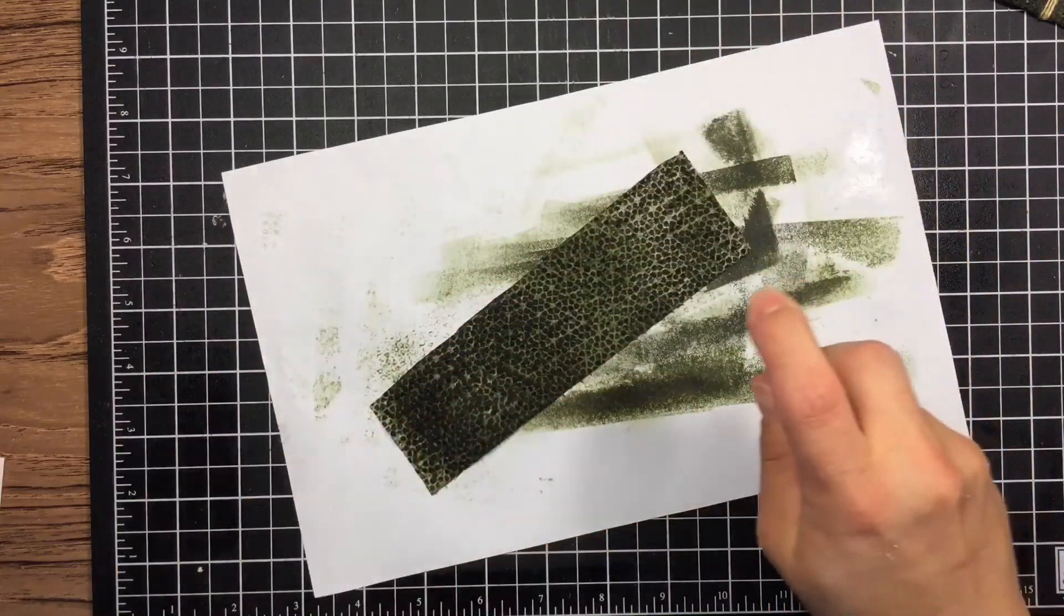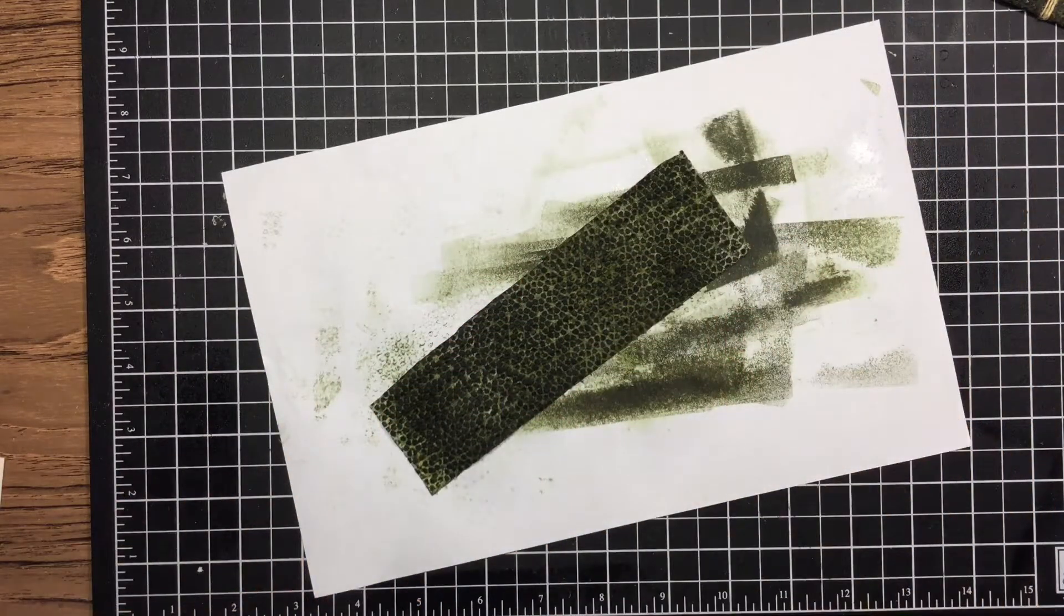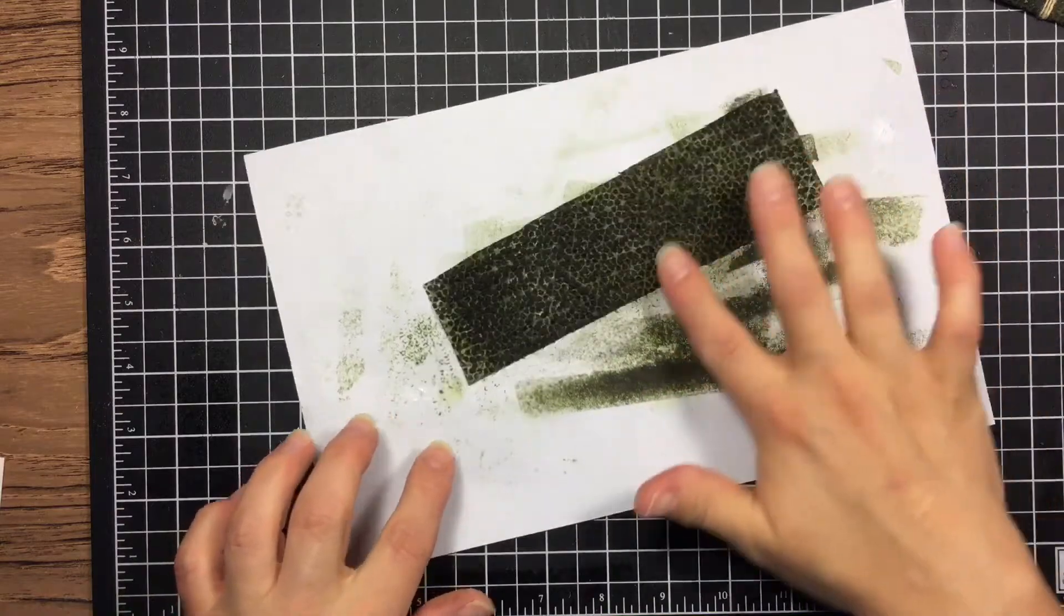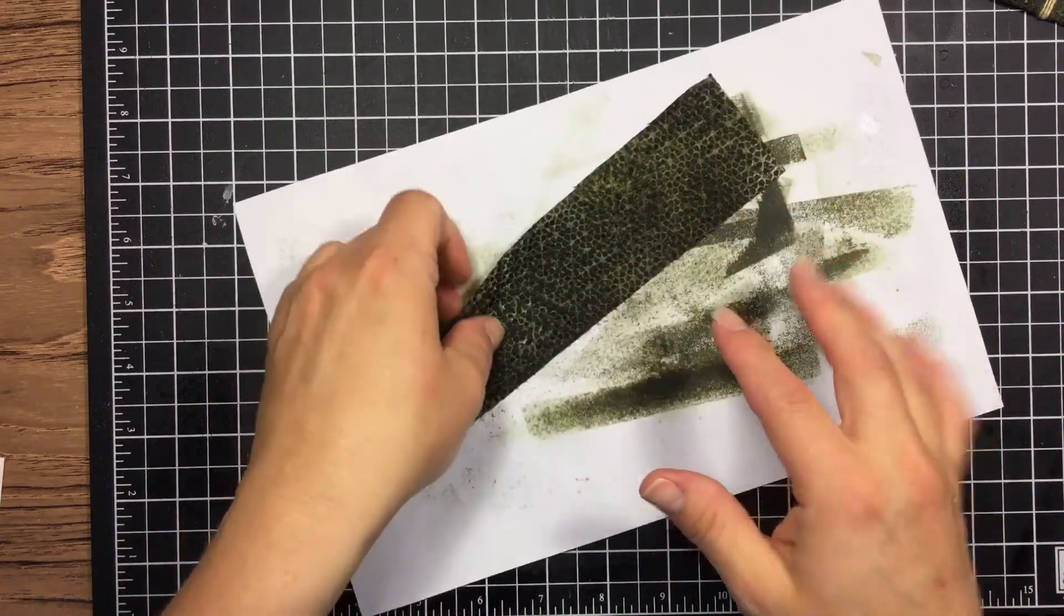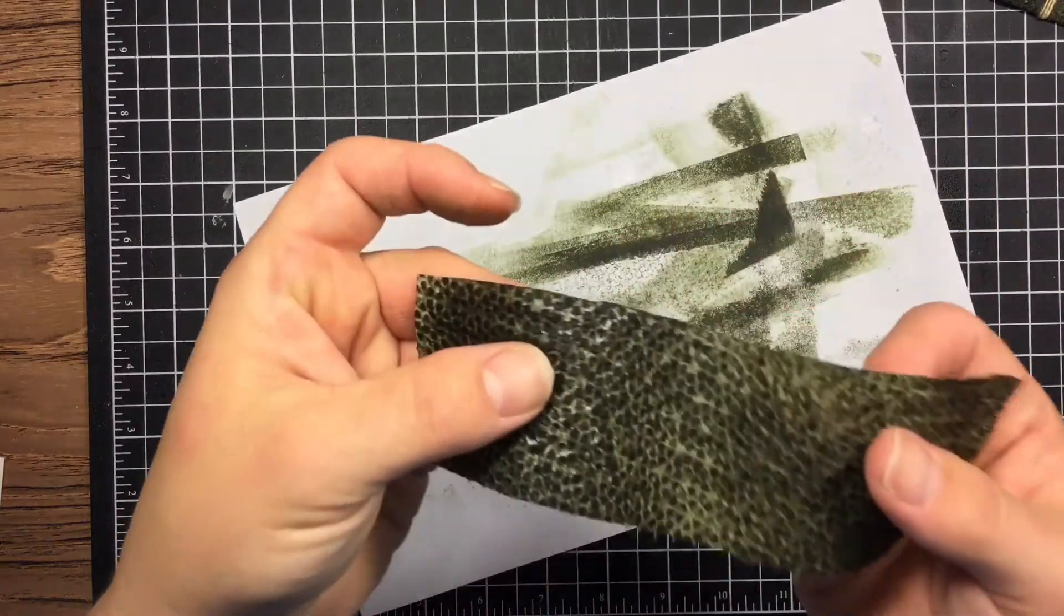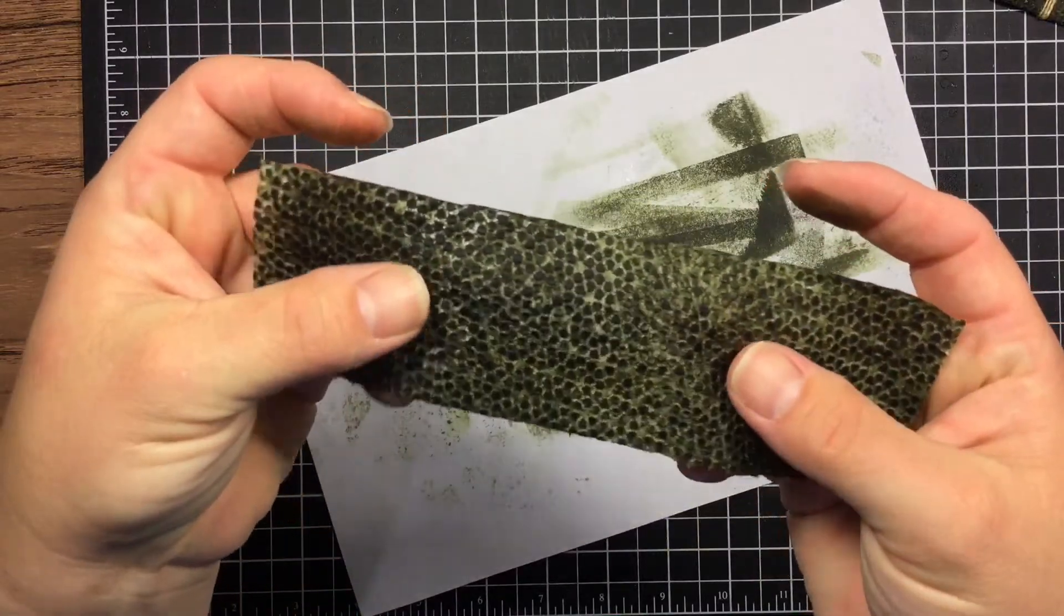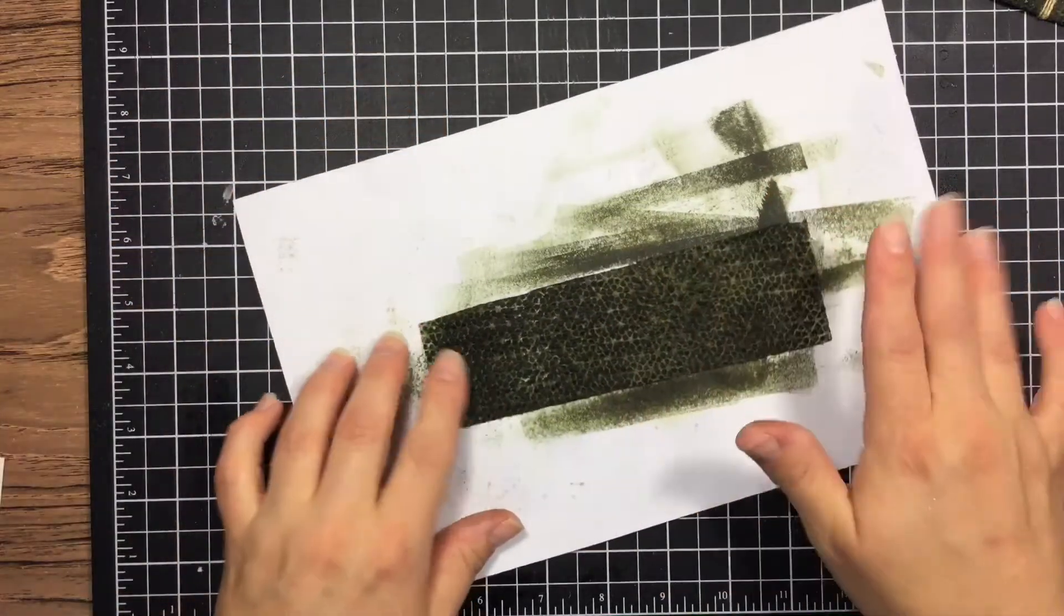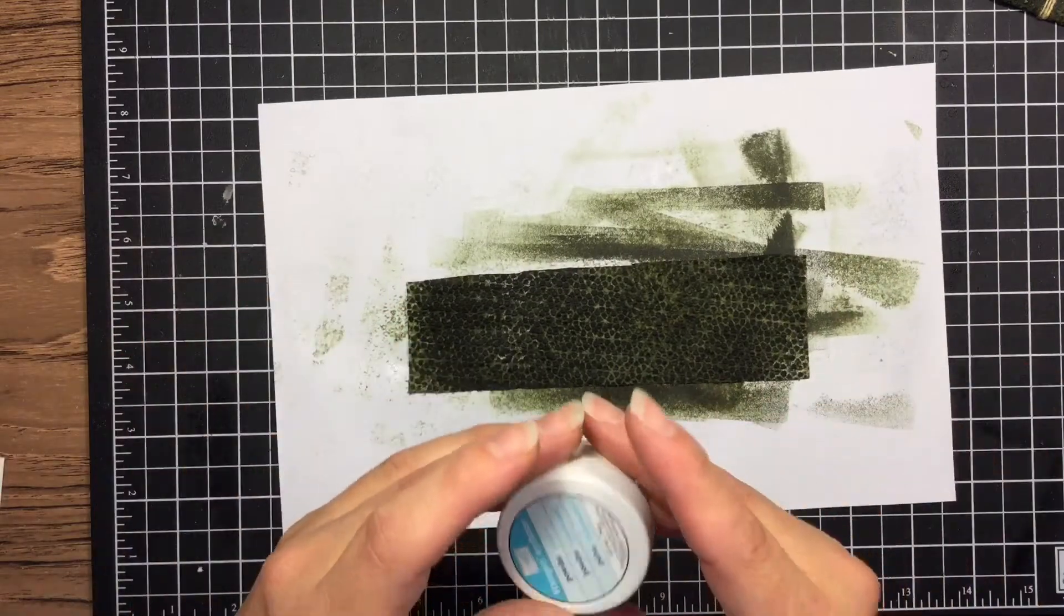I'm trying to be careful that I don't get even coverage because I want it darker in some areas and lighter in others, but I am spreading out the bumps a little bit so it isn't such an even pattern. You can see here it's already starting to look like reptile skin, but reptile skin is also shiny.